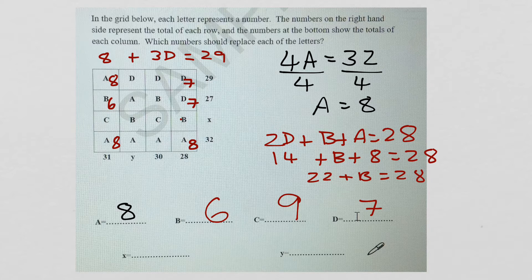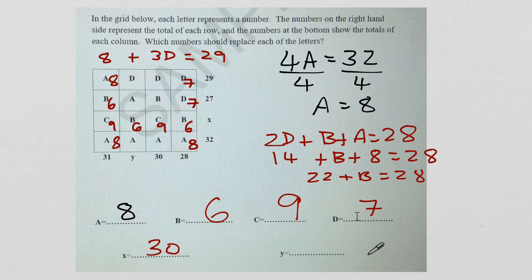Now you have a go. Find out what x and y equal using the numbers below. Did you get x equals 30? And y equals 7 plus 8 plus 6 plus 8, which equals 15, 21, 29. Well done if you got those correct.